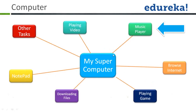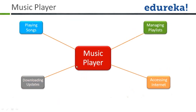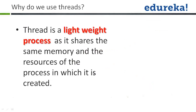For a supercomputer, the applications like video player, music player, etc., are different threads. But when you go inside the music player itself, it is an application, and within that application you've got different threads. So this was just for the idea, so that you can understand what is the function of a thread and why do we use it — for achieving multitasking.